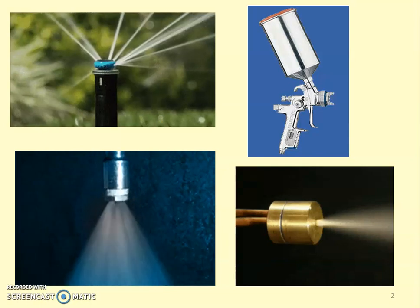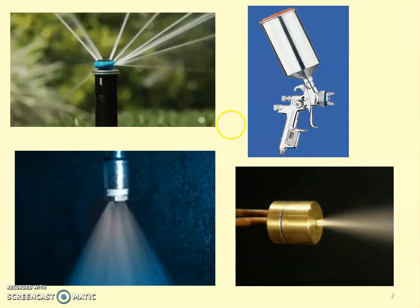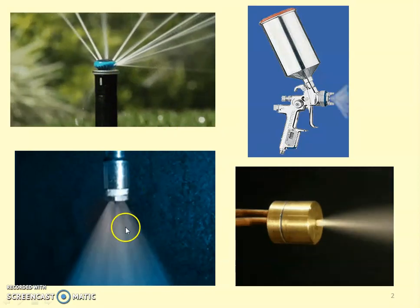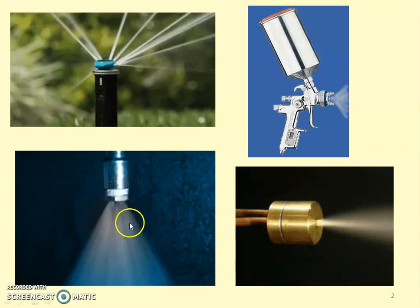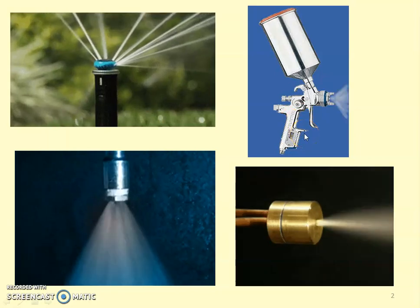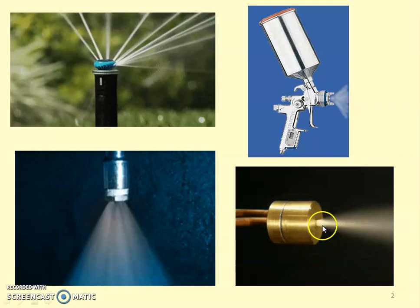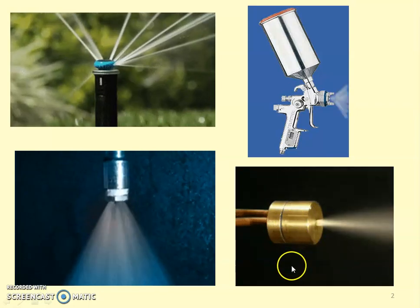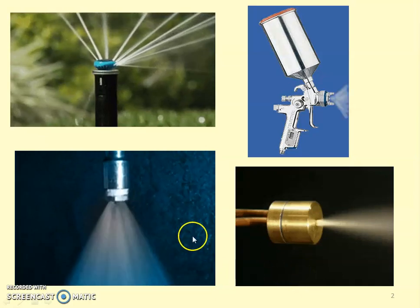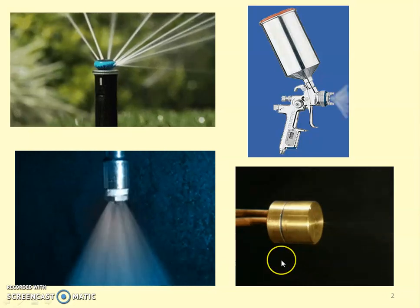These are some images of a nozzle. This is the lawn sprinkler, where the water jet is coming out with a higher velocity. This is again a nozzle — a paint spray gun, where the paint is sprayed. These are all animated images of the nozzle, where the fluid jet is coming out of a small opening.